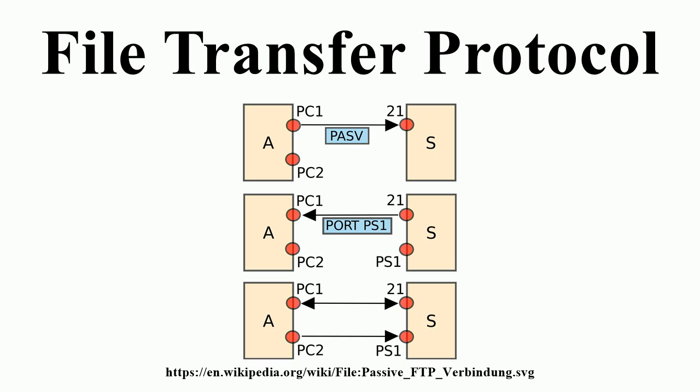Trivial File Transfer Protocol (TFTP) is a simple, lockstep file transfer protocol that allows a client to get or put a file onto a remote host. One of its primary uses is in the early stages of booting from a local area network, because TFTP is very simple to implement. TFTP lacks security and most of the advanced features offered by more robust file transfer protocols such as FTP. TFTP was first standardized in 1981 and the current specification can be found in RFC 1350.